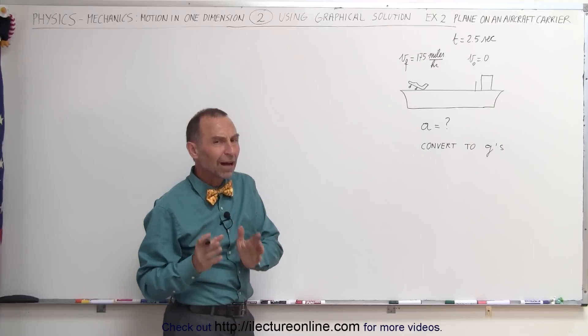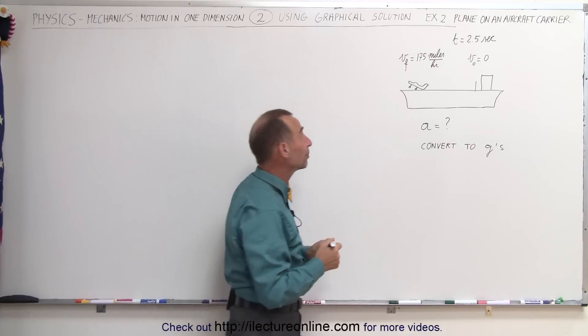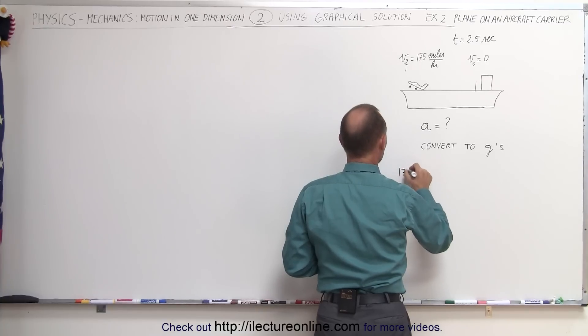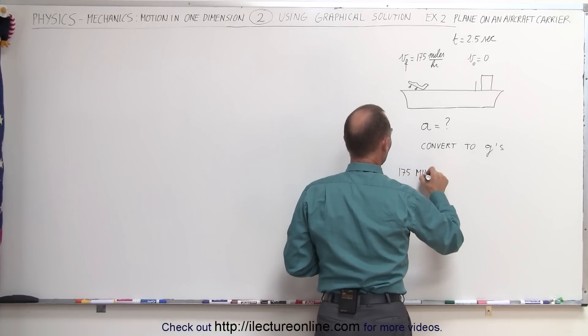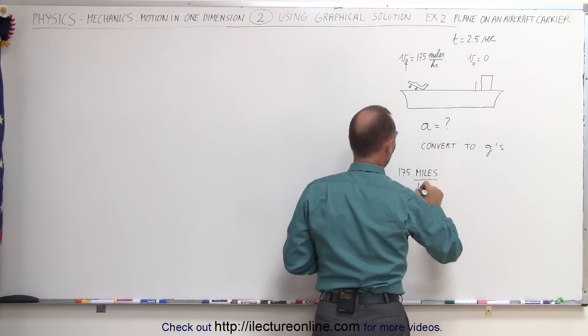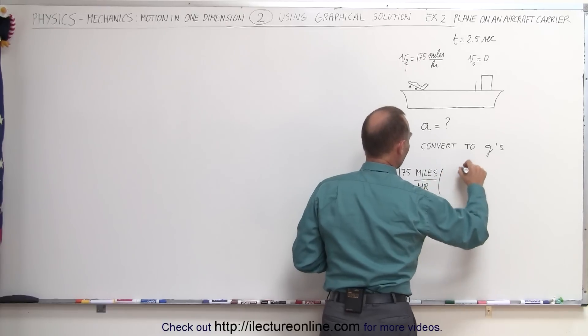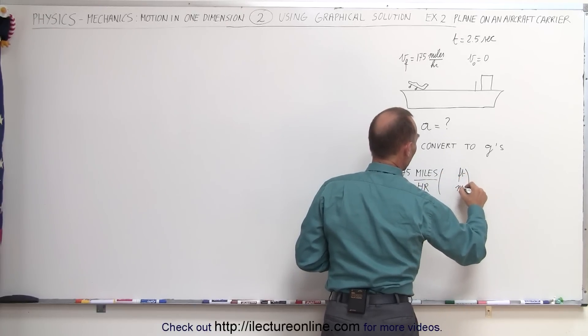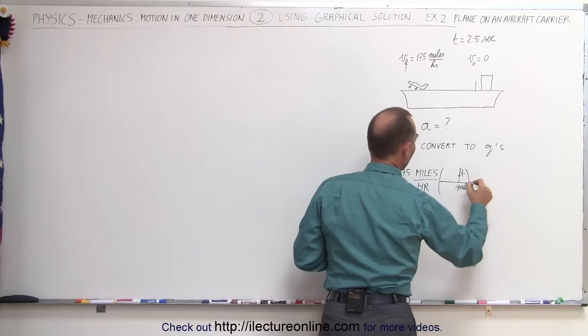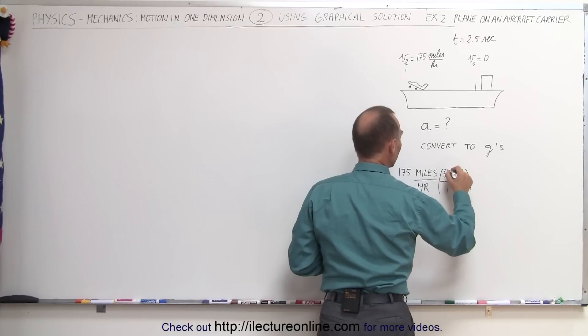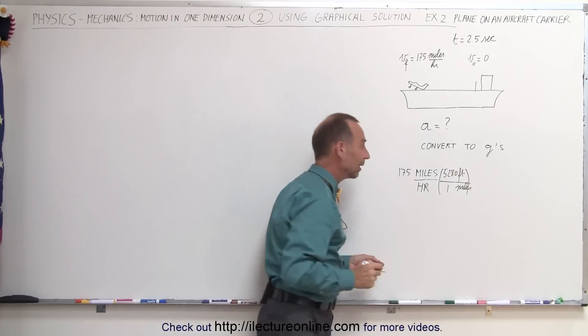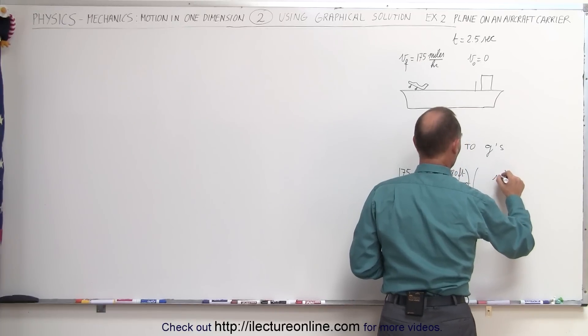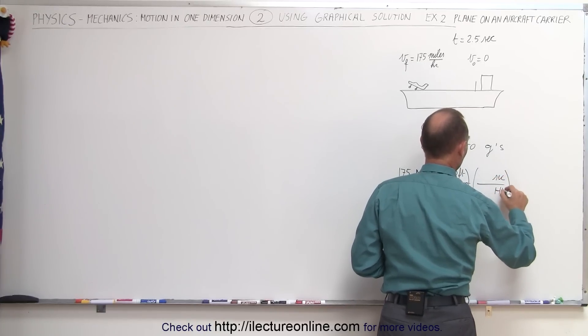Of course since we're dealing with miles per hour we probably want to go to feet per second. So let's see here, 175 miles per hour. If we convert that to feet, so we have feet at the top, miles at the bottom, and one mile is 5,280 feet. And then we also have to convert from hours to seconds. So we need seconds at the numerator, hours in the denominator, one hour...